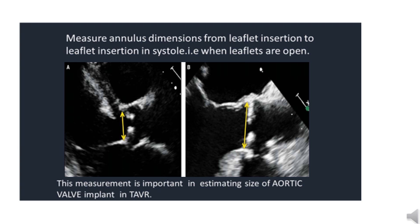The aortic annulus measurement is done from inner edge to inner edge, from the point of insertion of one leaflet to the point of insertion of another leaflet. The measurement is done in systole, that is when the leaflets are open. This measurement is important because it helps us calculate the size of the implant for procedures like TAVR.